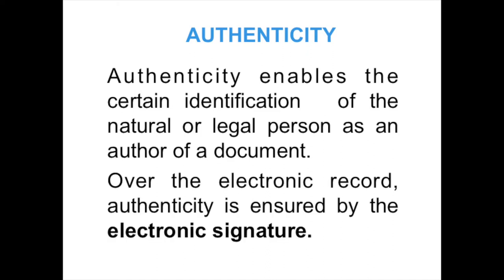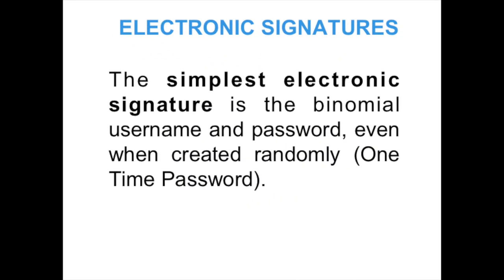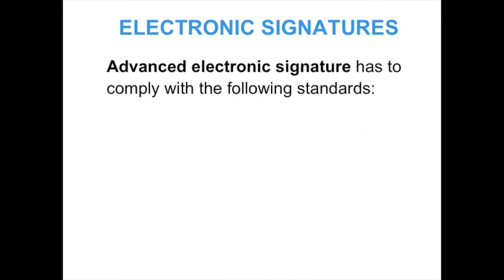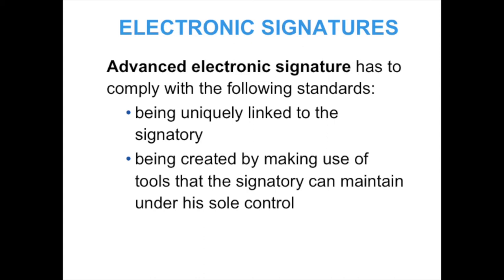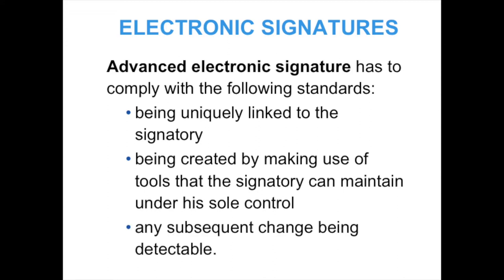Authenticity enables the certain identification of the natural or legal person as an author of a document. Over the electronic record, authenticity is ensured by the electronic signature. The simplest electronic signature is the binomial username and password, even when created randomly as a one-time password. Advanced electronic signature has to comply with the following standards: being uniquely linked to the signatory, being created by making use of tools that the signatory can maintain under its sole control, and a subsequent change being detectable.